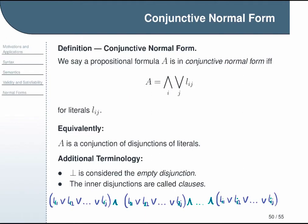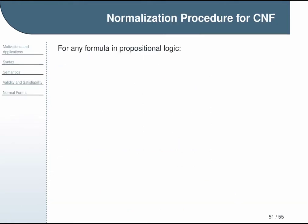Now again, having given you the definition of conjunctive normal form, the next thing to do is explain the normalization procedure. So again, we can do this for any formula in propositional logic, and the procedure is as follows. First, you compute the negation normal form. You already know how to do that.